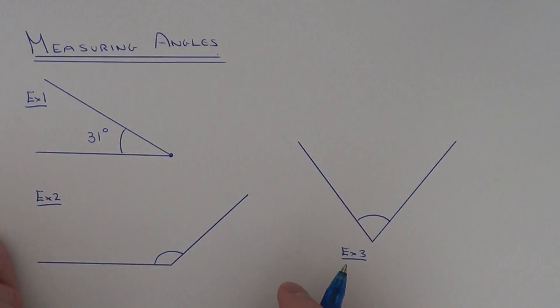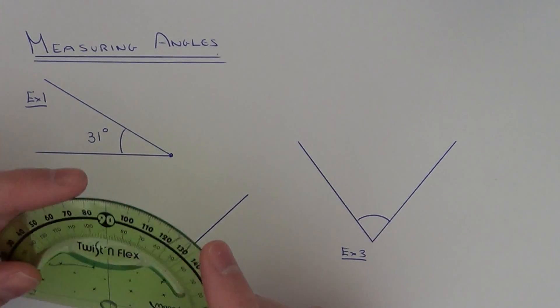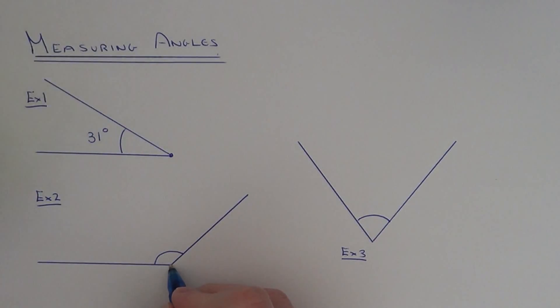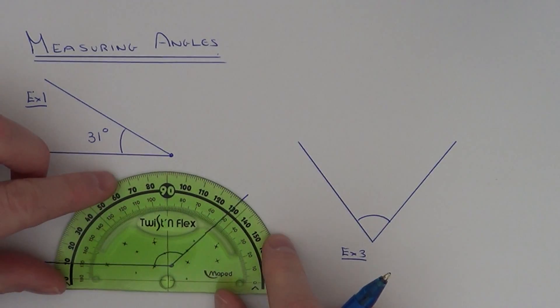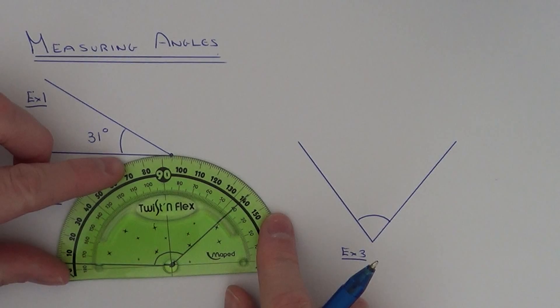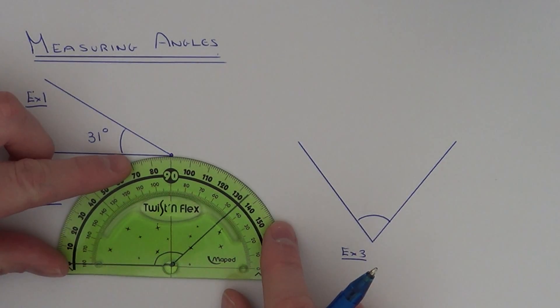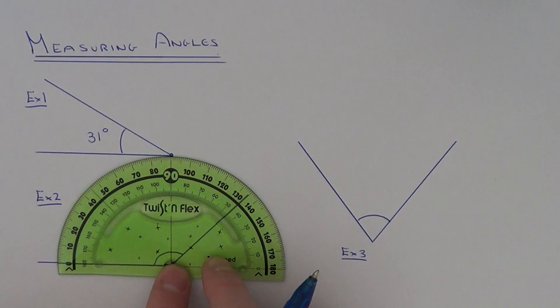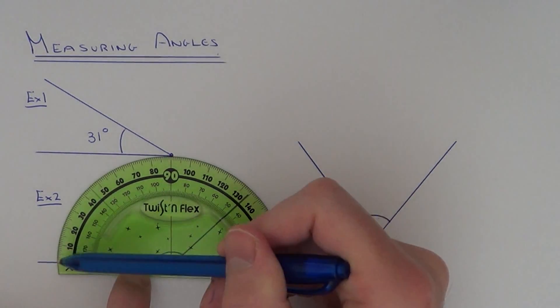Let's have a look at example two. So again if you get your protractor, the center of the protractor needs to go onto the corner of your angle. Let's put it there, move the bottom line onto the line. So again you'll see we've got the outside zero on the bottom line, so again we use the outside scale.